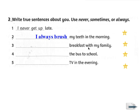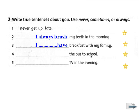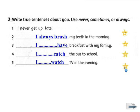Number 3 — breakfast with my family. 'Breakfast' means the morning meal, so we use the verb 'have' or 'eat'. It depends on each student whether you use never, sometimes, or always to complete the sentence. Number 4 — the bus to school. We take the bus to school, so use 'catch the bus'. Again, fill in your own frequency adverb. Number 5 — TV in the evening. The verb is 'watch TV'. Fill in the correct adverb for your own situation.